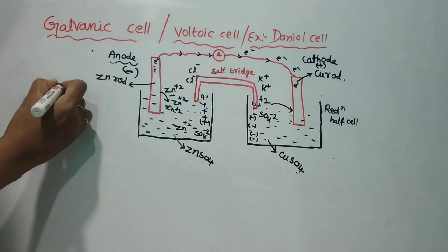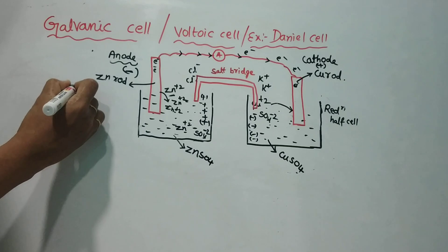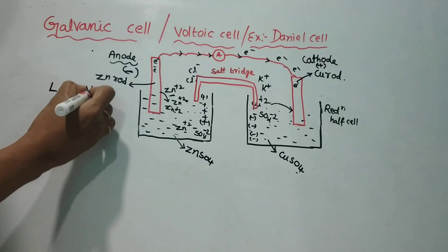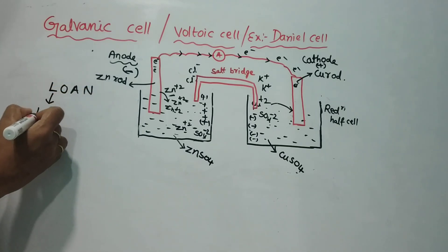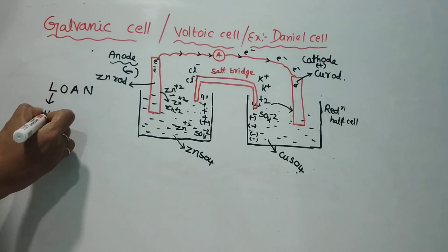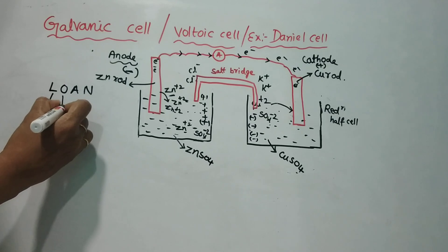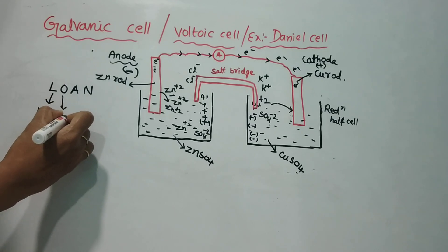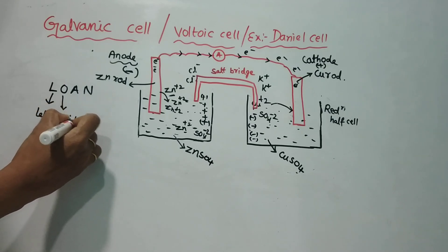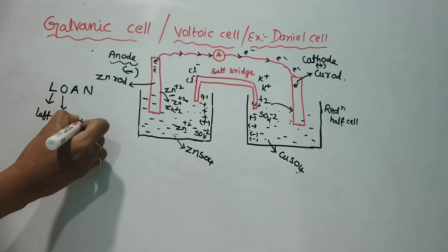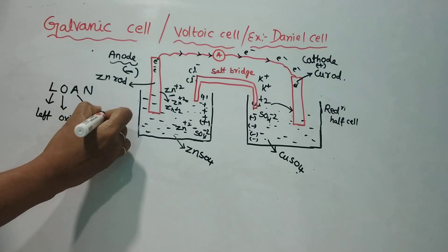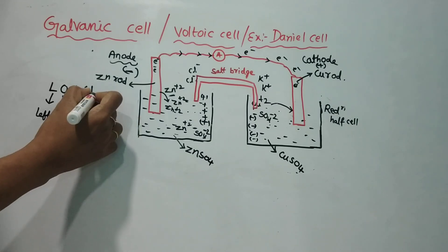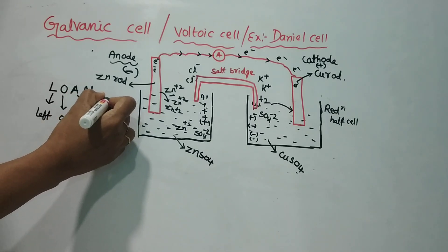We can use the mnemonic LOAN: Left side Oxidation, Anode Negative charge. So the left side is oxidation at the anode with negative charge.